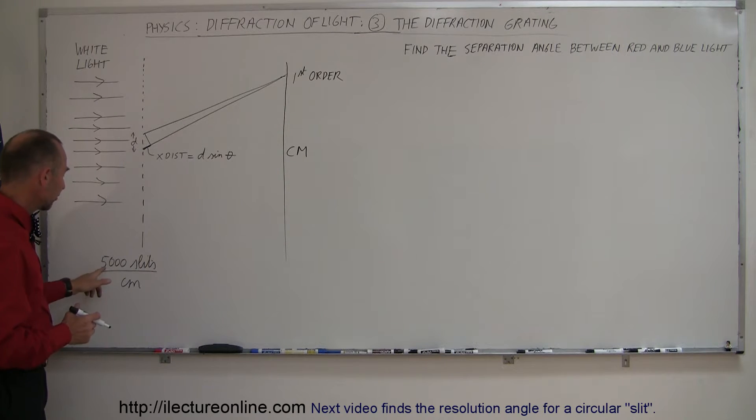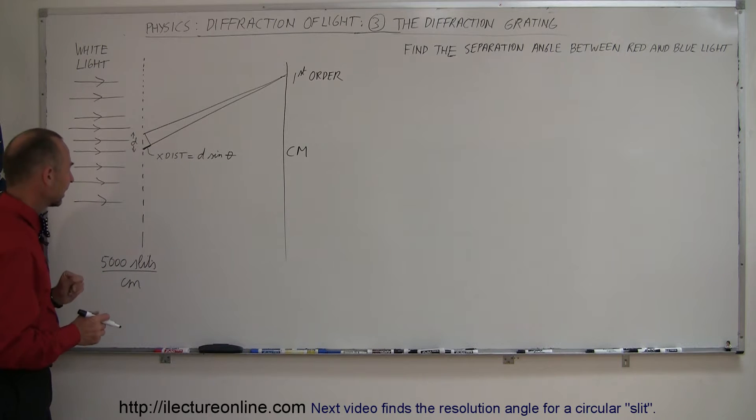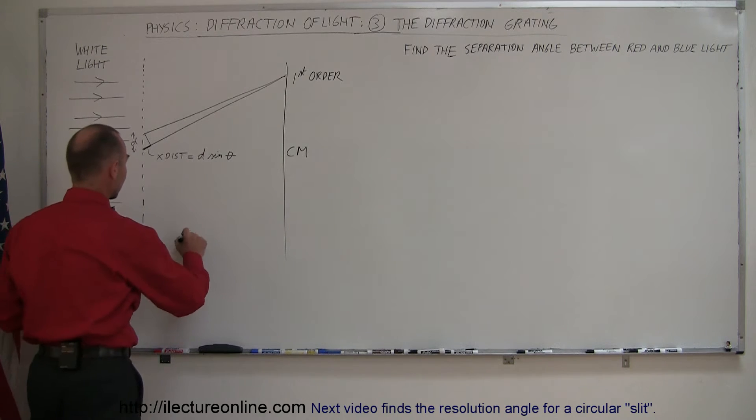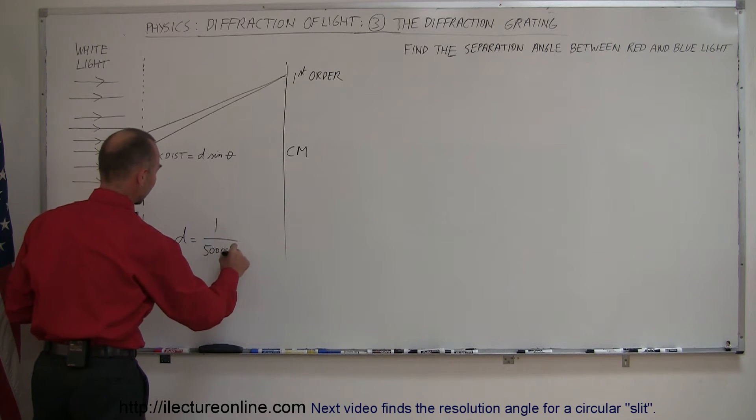Let's say we have sunlight or an incandescent light bulb shining through the diffraction grating. And let's say the diffraction grating has 5,000 slits per centimeter, so what is the separation distance in that diffraction grating? And we know that d is simply equal to 1 over the number of slits per centimeter, so that's 5,000 slits per centimeter.